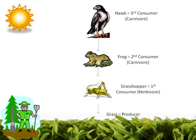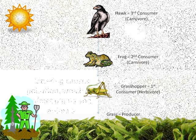The sun provided the producers with the light they needed to grow and make their own food. Then Mr. Grasshopper became our first consumer in our food chain, eating the grass. Mr. Frog then ate Mr. Grasshopper to become our second consumer. And lastly, Mr. Hawk became our third and top consumer.